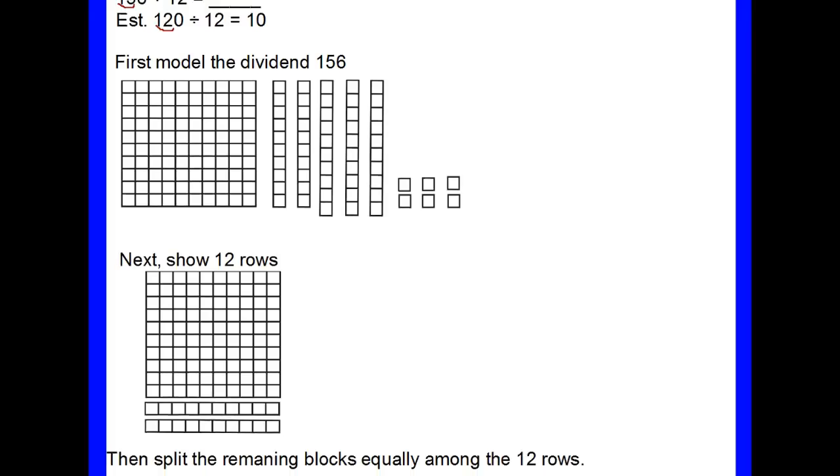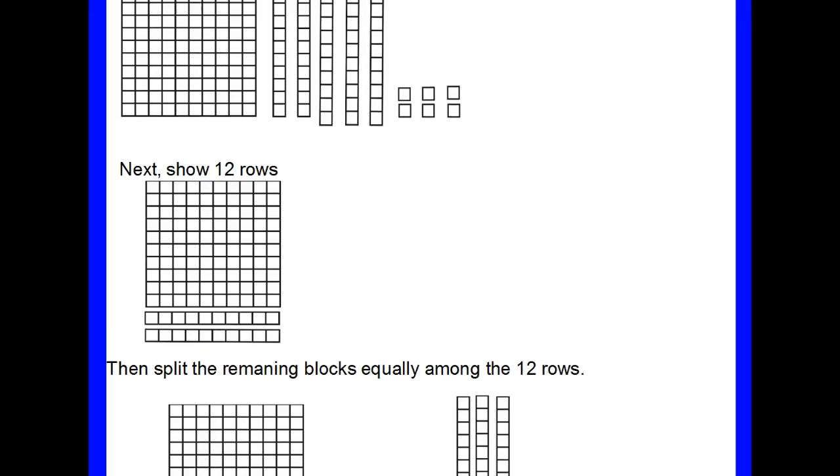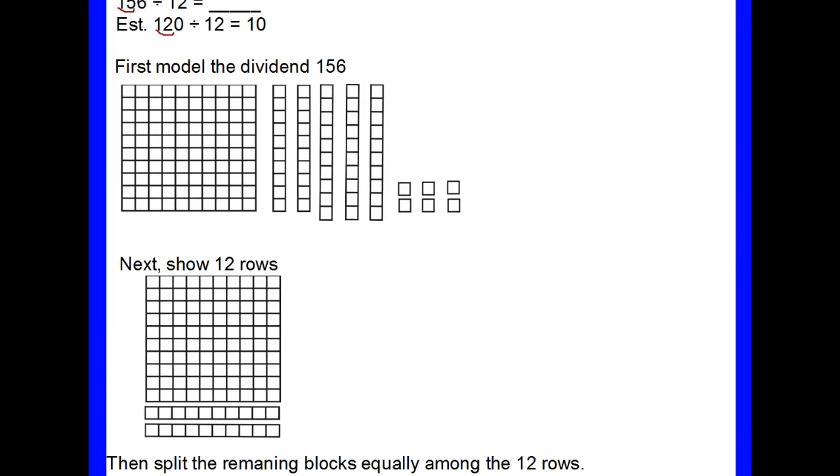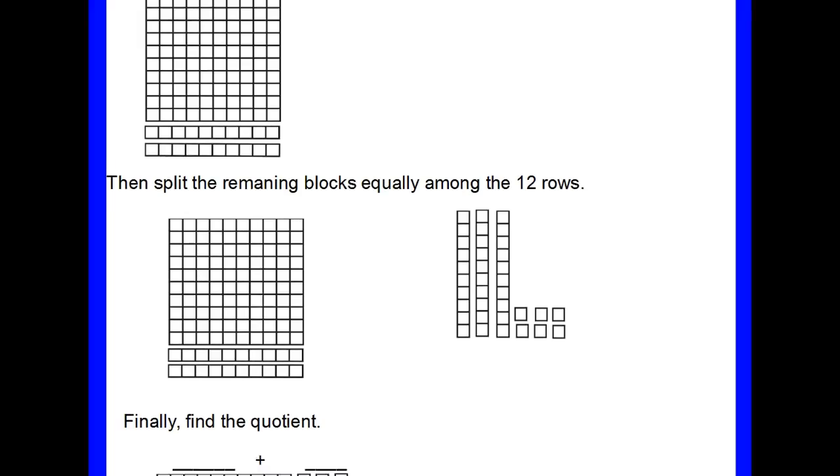Now, what you're going to want to do is to split the remaining blocks equally among the 12 rows. So let's go ahead and take out this flat. So this is what I started with, my flat that I started with, but I've used it already, and it's here. And I've used two of these longs already, and they're down here. So I'm taking them away. What I'm left with is three longs and six units, and those are the ones I'm going to divide equally among the 12 rows.